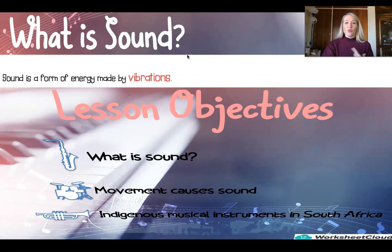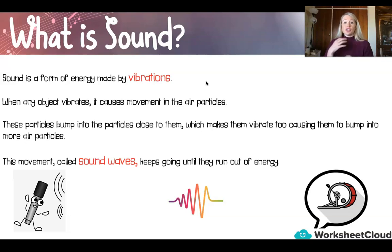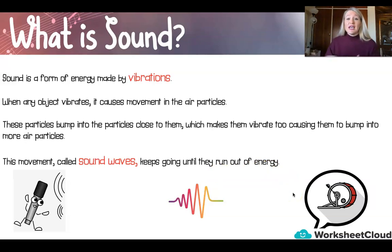So first of all, what on earth is sound? Sound is a form of energy made by vibrations. When any object vibrates, it causes movement in the air particles. These particles then bump into the particles close to them, which makes them vibrate too, causing them to bump into more air particles. This movement is called sound waves, and it keeps going until they run out of energy, or that energy is then transferred to another form of energy. And so, boys and girls, that's how sound is created — sound is a series of vibrations.